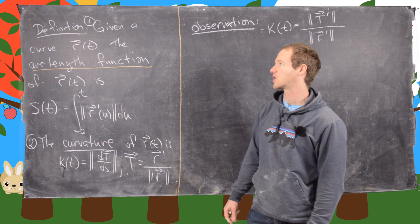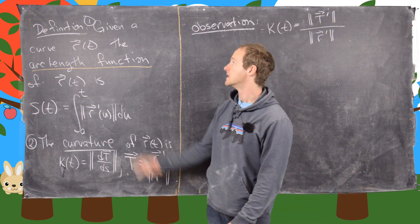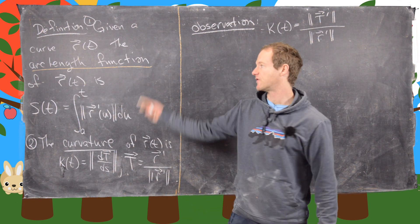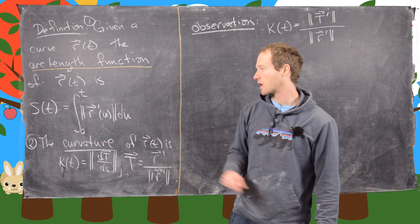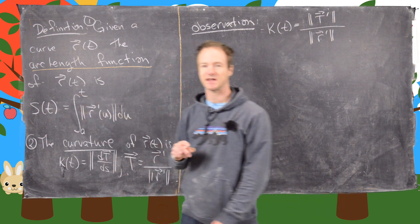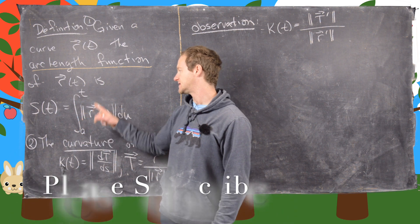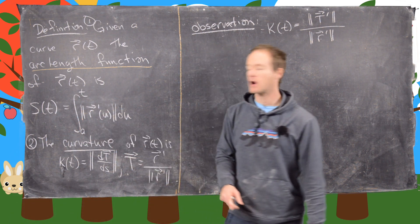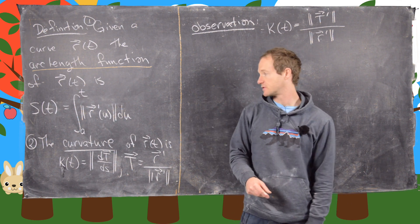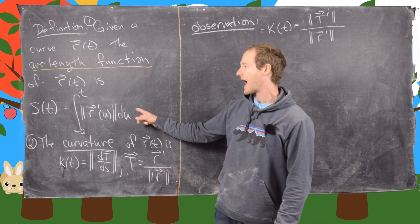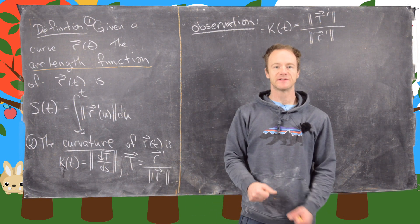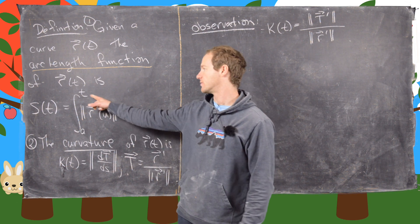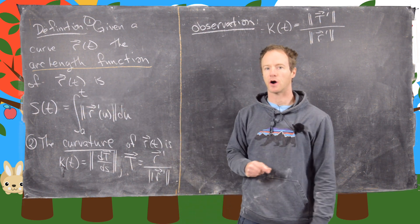In this video we're going to look at the notion of the curvature of a curve. We need a preliminary definition. Given a curve r of t, the arc length function of r is given by s of t, which is the integral from a to t of the magnitude of the vector r prime of u du. The output of s of t gives us the length from the starting point of the curve to an arbitrary variable t. That's why it's called the arc length function.